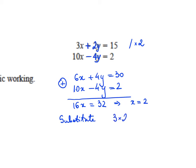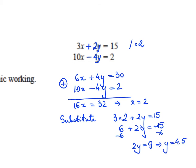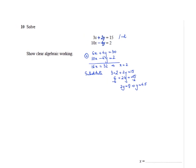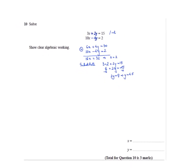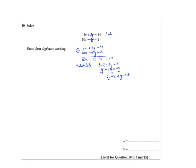6 plus 2y equals 15. Take away 6 from both sides, 2y equals 9, so y is 4.5. I'm going to write the answer: x equals 2, y equals 4.5.